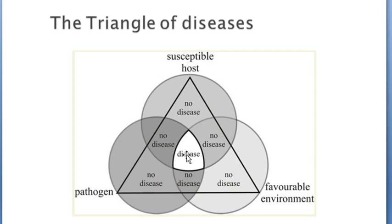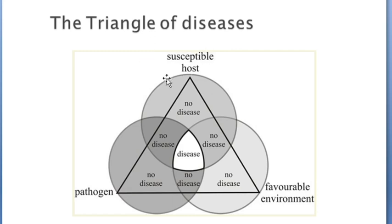For a disease to occur in an animal farm, the following three inclusive conditions must be gathered. Inclusive means that if any of these conditions is lacking, there is no disease. First, we must have a pathogen. Then, we must have favorable environmental conditions for the pathogen. And finally, we must have a susceptible host — that is, the animal.